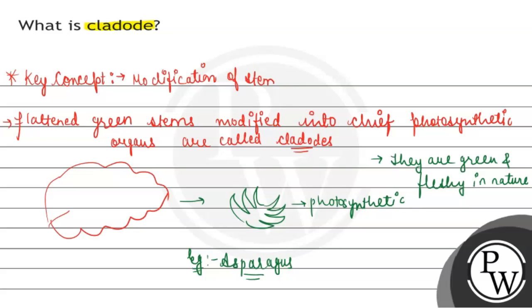Cladode basically is a modification - flattened green stem structure modified, photosynthetic and green and fleshy in nature. Example: Asparagus.